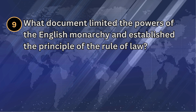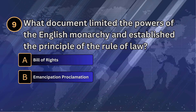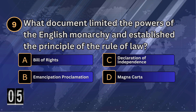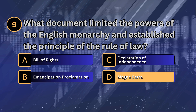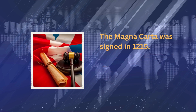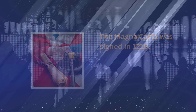What document limited the powers of the English monarchy and established the principle of the rule of law? The Magna Carta. The Magna Carta was signed in 1215.